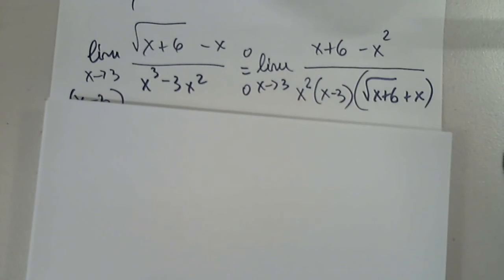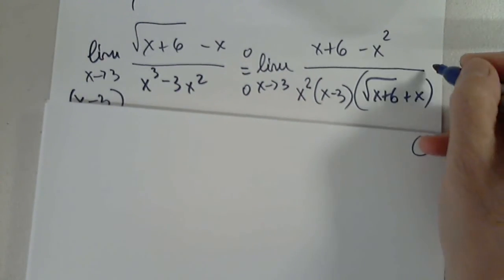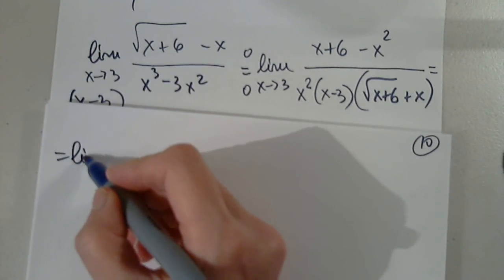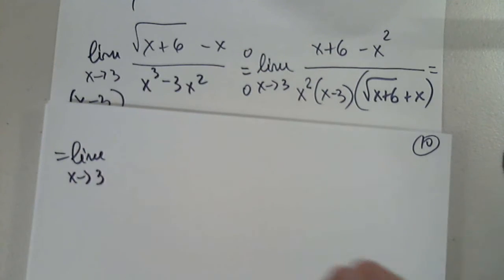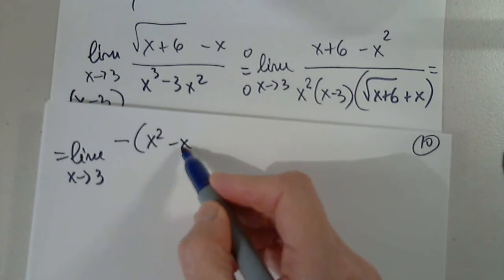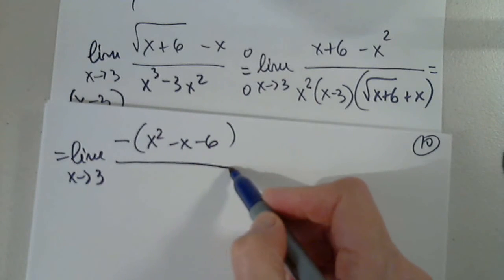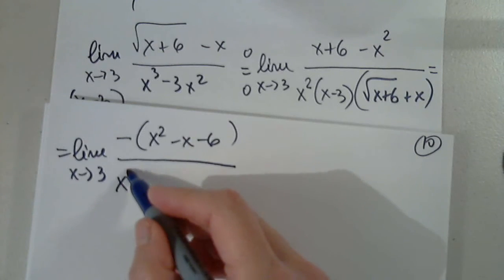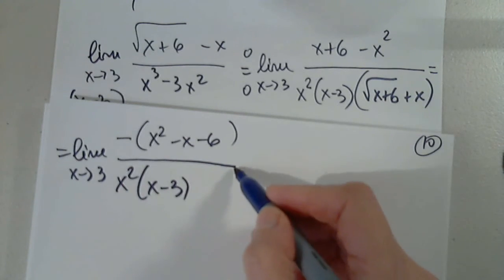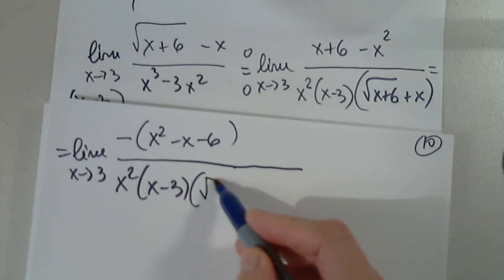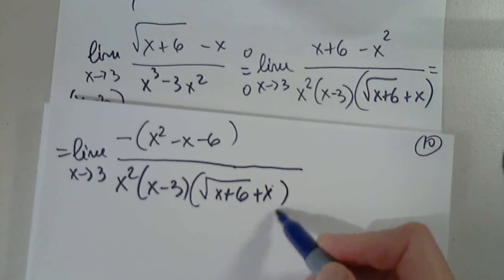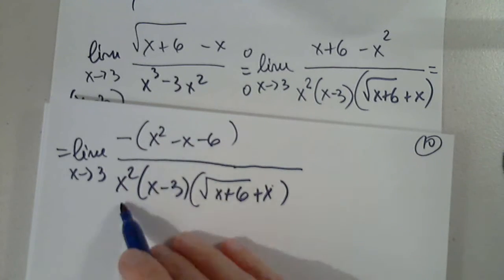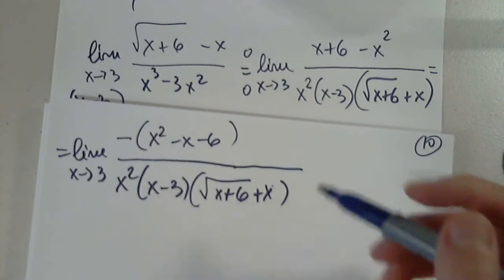So in the next step, I will rearrange and factor out negative 1. So limit as x approaches 3. Negative outside x squared minus x minus 6. You should always refuse to work with a negative leading coefficient. At any point in time, you should refuse to do that. I will factor this. Of course it has to have an x minus 3. And it does. x minus 3 times x plus 2.